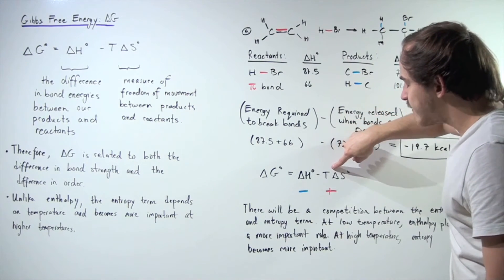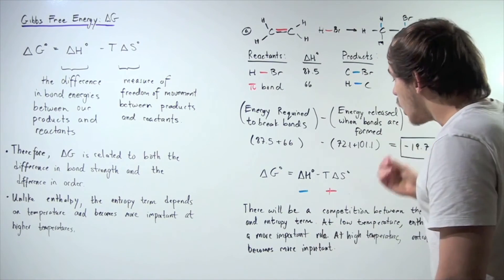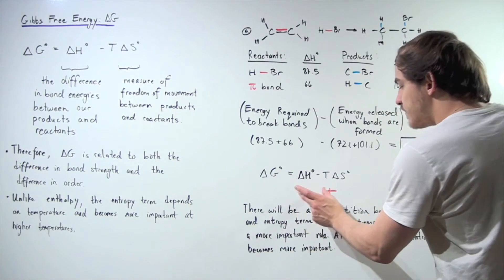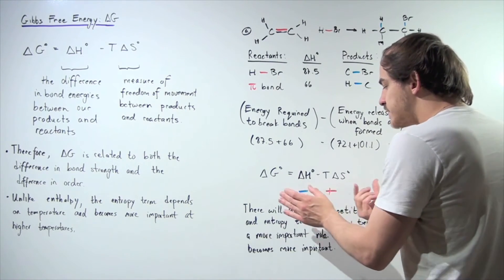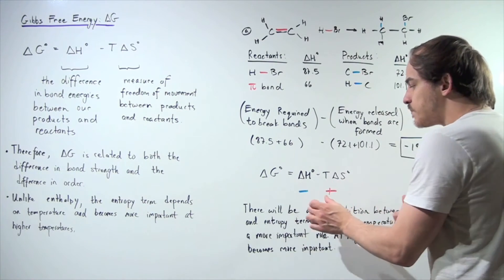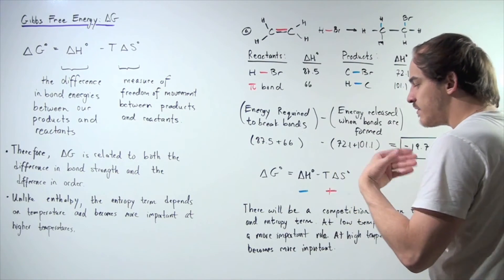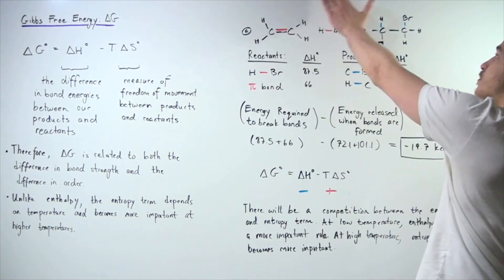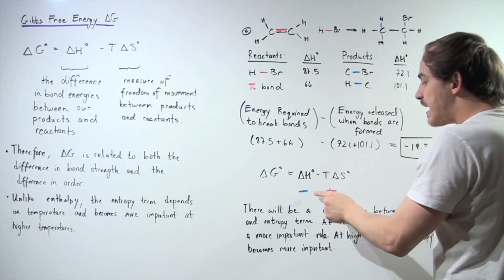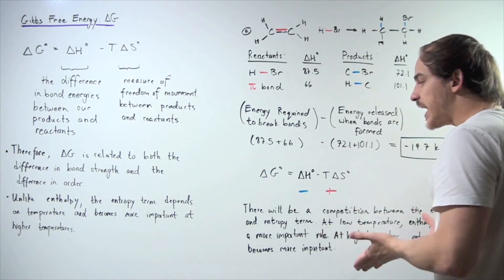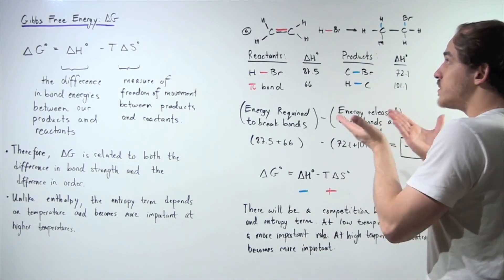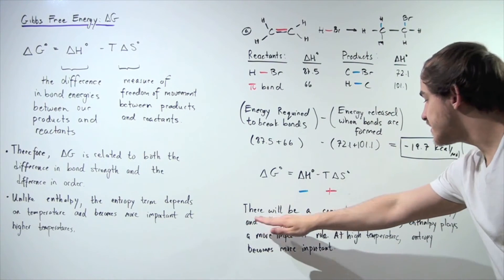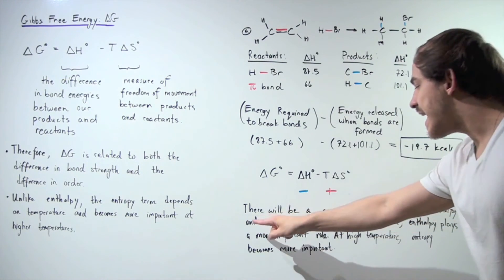Remember, temperature in Kelvin cannot be negative — the lowest possible temperature is zero. So we have a negative enthalpy term and a positive entropy term, and we have to figure out which one wins. If the negative term is larger in magnitude, change in G will be negative and we'll have a spontaneous reaction. But if the positive term is larger, change in G will be positive and we'll have a non-spontaneous reaction. So there is a competition between the enthalpy and entropy terms.